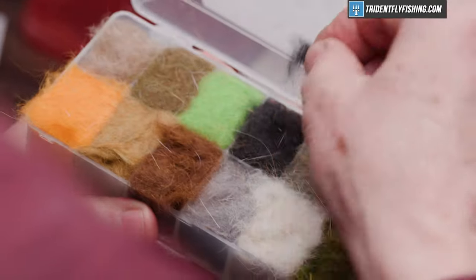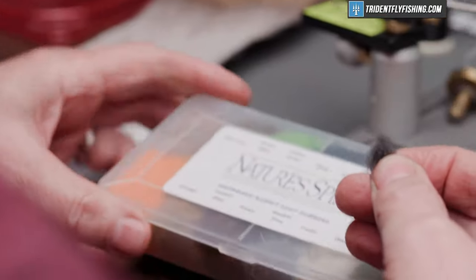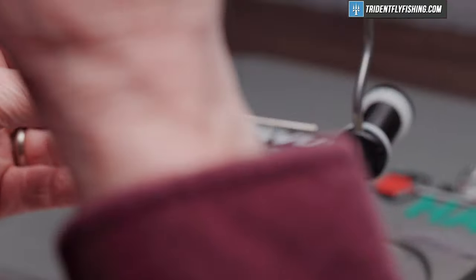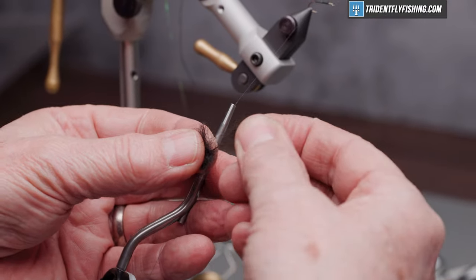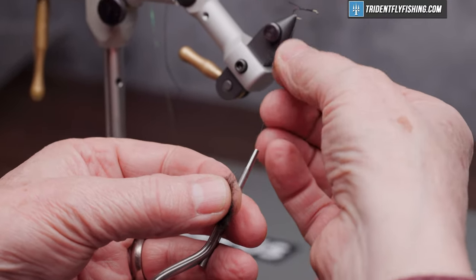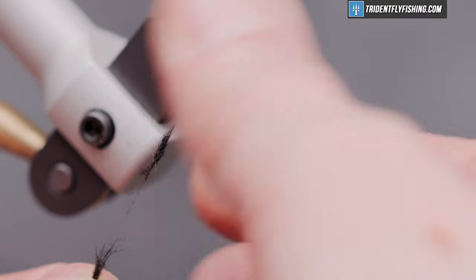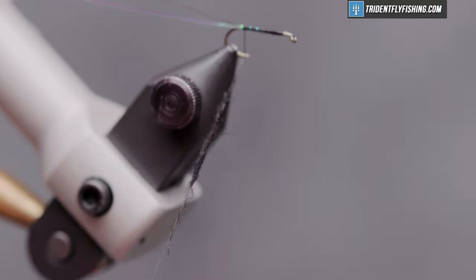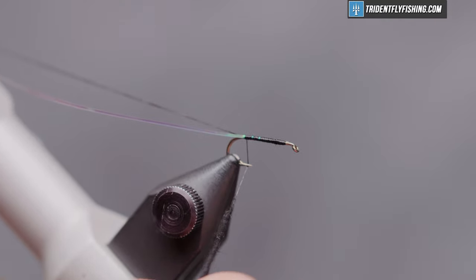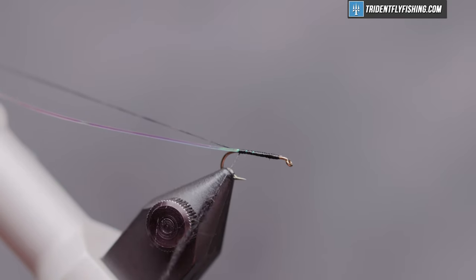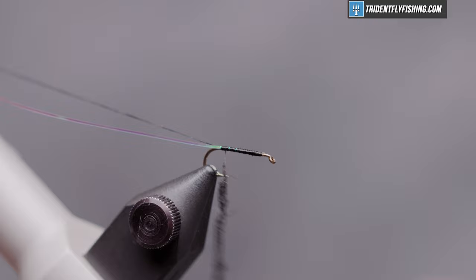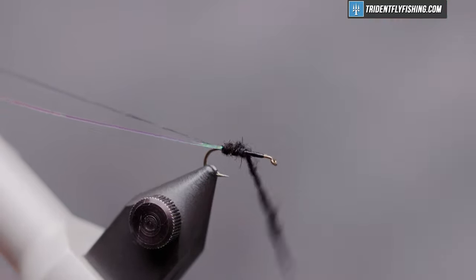The body of this fly is some nature spirit snowshoe rabbit dubbing in black. Nice spiky stuff. So we'll form a small noodle. Just a bit more.